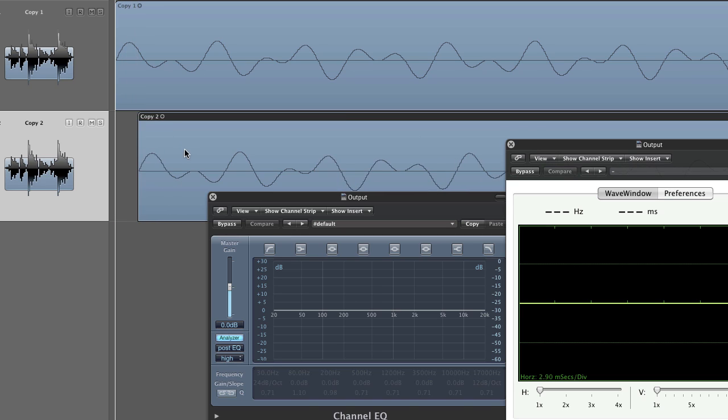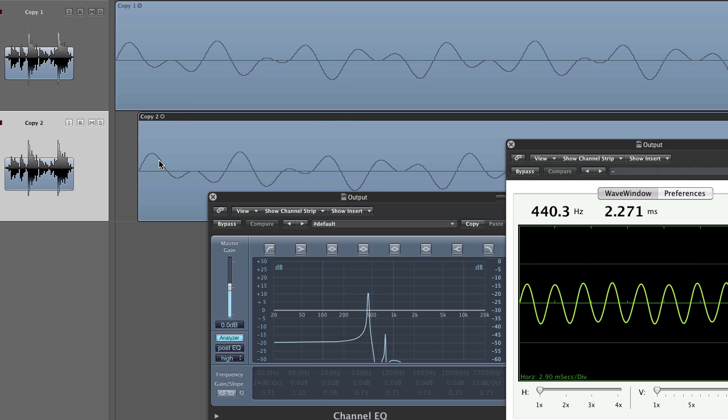Watch what happens if I delay one of the copies about half of a wavelength of one of the higher frequencies. Notice how now the higher frequency is much, much lower and you mostly just see the lower frequency in the oscilloscope here.